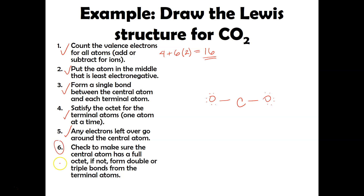Step six — the important one. Checking this molecule: the oxygens are satisfied, each oxygen has a total of eight electrons with the bond and the lone pairs. But notice the carbon — it only has four electrons. So we need to take a pair of electrons off of this oxygen and make a double bond, and then take a pair of electrons off of this oxygen and make another double bond. That way carbon is satisfied.